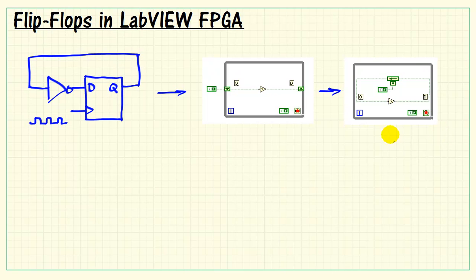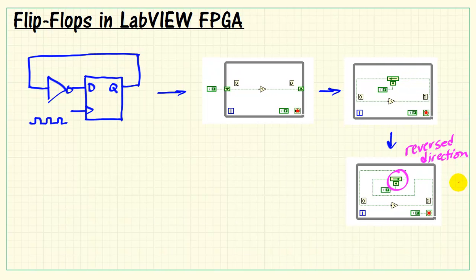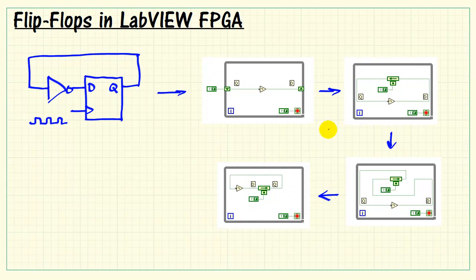Now let me start to redraw this just a bit. LabVIEW provides a mechanism by which you can change the direction of the feedback node — that's what I've done here. All of the wiring is still the same; I've simply twisted the feedback node in the opposite direction. But if you trace the wiring, you'll see it's the exact same circuit. Let me go ahead and clean up the wiring a bit. You should be able to trace this and see it's exactly the same circuit again — Q going into the inverter, which then goes into the D input. The really neat thing here is that the feedback node version looks exactly like the original schematic circuit.